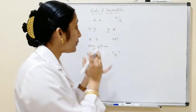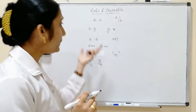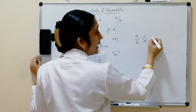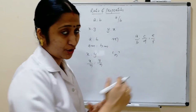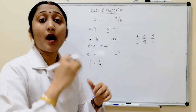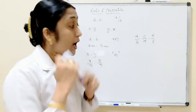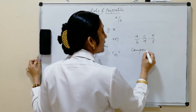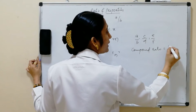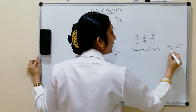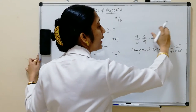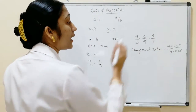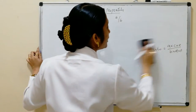From the ratios A/B, C/D, and E/F, the compound ratio is nothing but A×C×E divided by B×D×F — that is, multiply all the numerators and divide by the product of all the denominators.